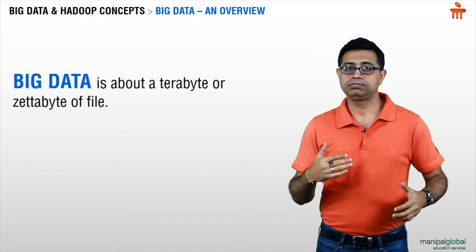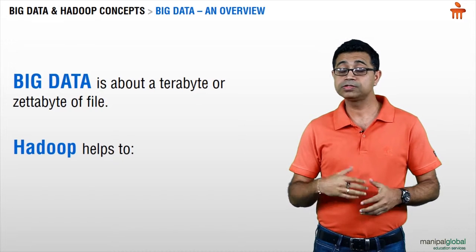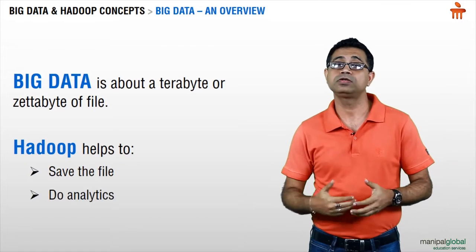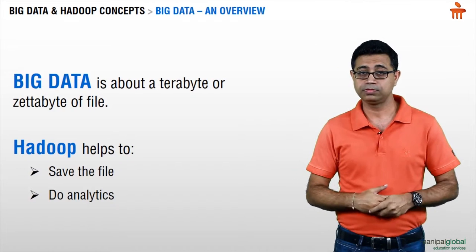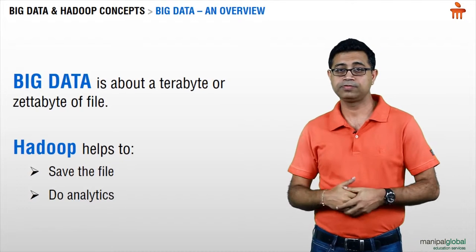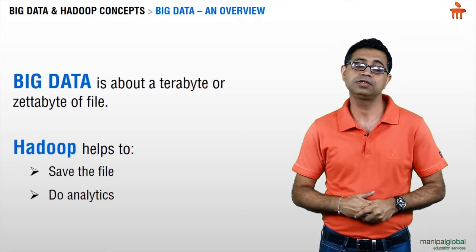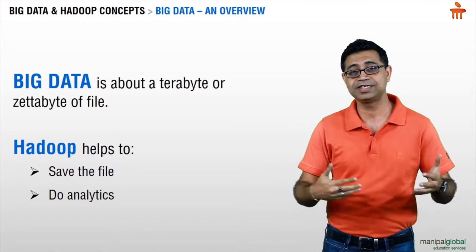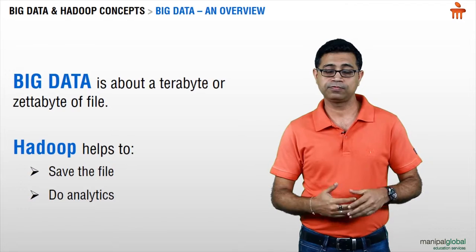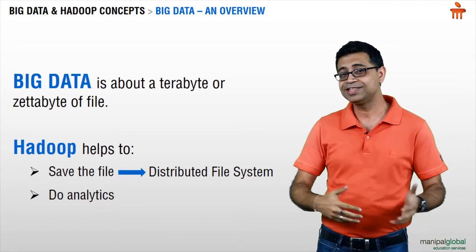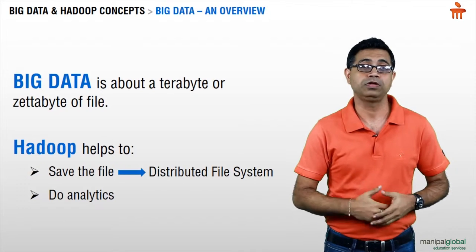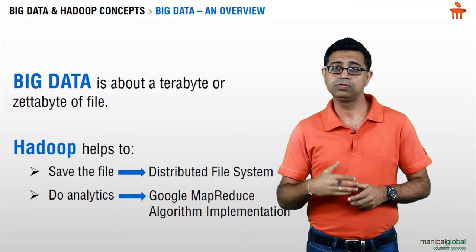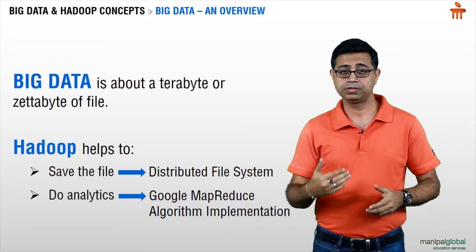Big data is about at least a terabyte or a zettabyte of file. Hadoop is a framework which helps you, first, save that file and, second, do analytics on top of it. When a file starts at one terabyte in size, you have problems saving it and accessing it. Hadoop helps you save this file via its distributed file system. Once the file is saved, it helps you do analytics on top of it — using the MapReduce algorithm implementation.